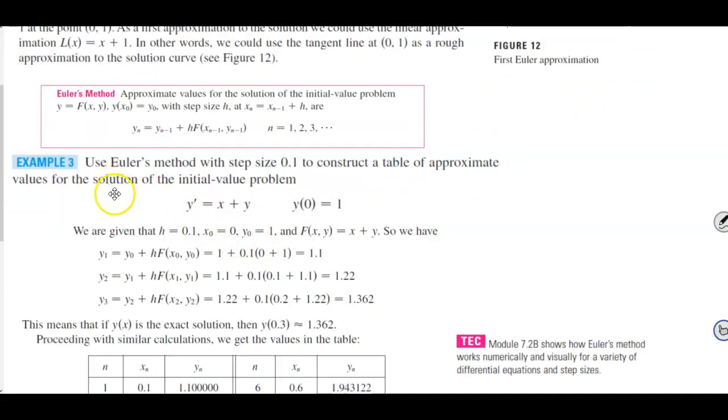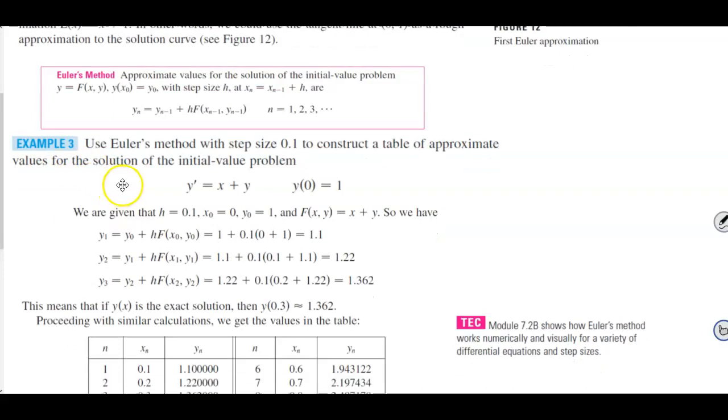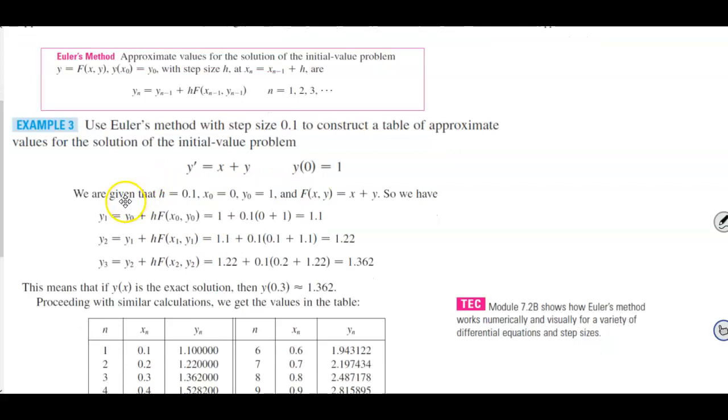So in example number three, we want to use Euler's method with step size 0.1 to construct a table of approximate values for the solution of the initial value problem: y prime is equal to x plus y, y(0) is equal to 1.